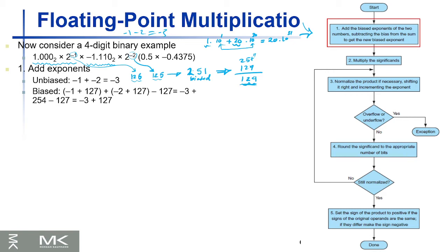The algorithm must subtract 127 because the exponents are biased. When you add the two biased exponents directly, you're adding 127 twice. So the correct operation is: (minus one plus 127) plus (minus two plus 127) minus 127, which gives minus three plus 127 — the correct biased result. Minus three is the actual exponent, and 127 is the bias. That's the first step.